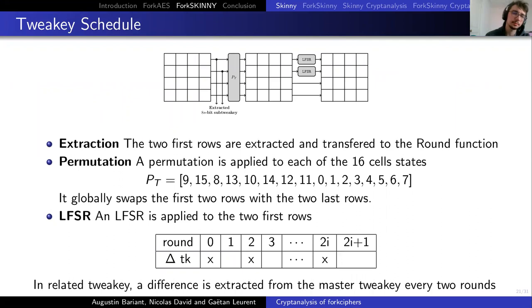Regarding the tweaking schedule, first there is an extraction operation that consists in extracting the two first rows and transferring them to the round function. Then there is a permutation, which is applied to each of the 16 cells, and then an LFSR. Something to remark regarding permutation is that it globally swaps the two first rows and the two bottom rows. Hence, if we place ourselves in the related tweakey and we choose one precise cell in which we put some difference, this difference will be extracted and transferred to the round function every two rounds.